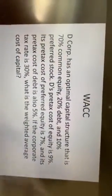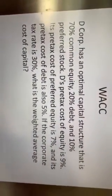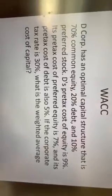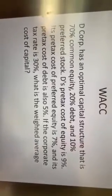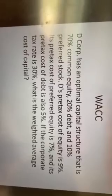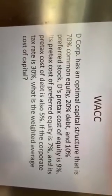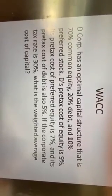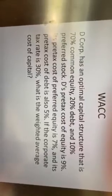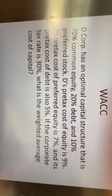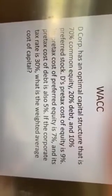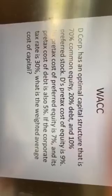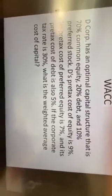Let's do this. So here, the company has an optimal capital structure that is 70% common, 20% debt, and 10% preference shares. The pre-tax cost of equity is 9%, preference is 7%, and debt is 5%. If the corporate tax rate is 30%, what is the weighted average cost of capital?